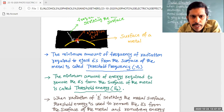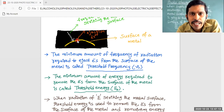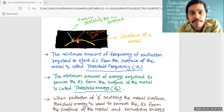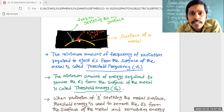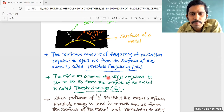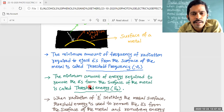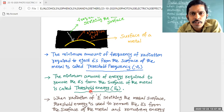Suppose at a point on the surface of the metal, if an electron is there, that electron is bound to the surface of the metal with some energy. So to remove the outermost electron from the surface of the metal, some minimum amount of energy is required. That minimum amount of energy required to remove the electrons from the surface of the metal is called threshold energy.